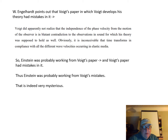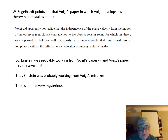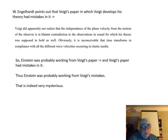Engelhard points out that Voigt's paper had mistakes in it. Voigt apparently did not realize that independence of the phase velocity for the motion of the observer is a blatant contradiction to observations in sound, for which his theory was supposed to hold as well. It is inconceivable that time transforms in compliance with all the different wave velocities occurring in elastic media. So Einstein was probably working from Voigt's paper, which had mistakes — meaning Einstein was probably incorporating those mistakes into his own theory. And this is all very mysterious.